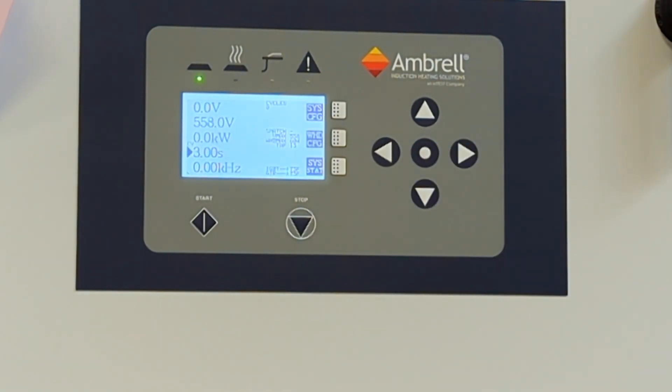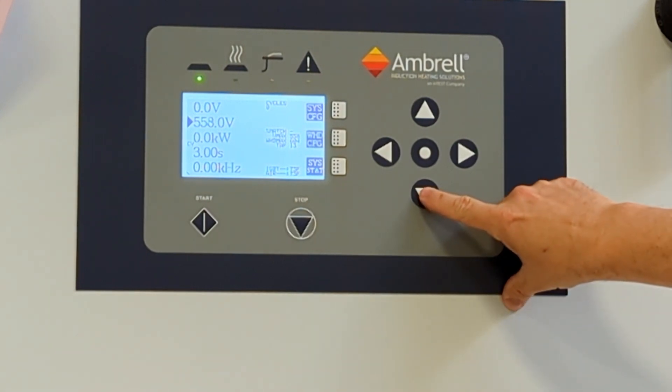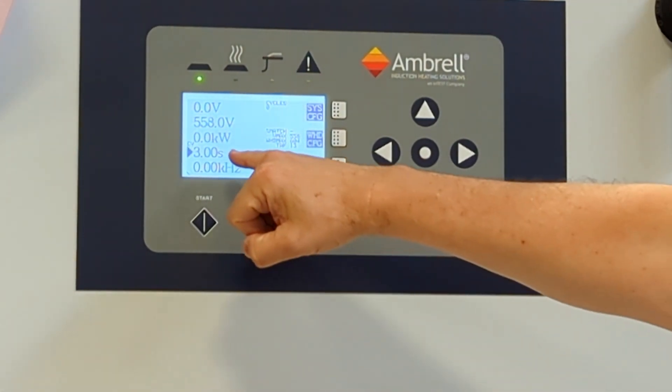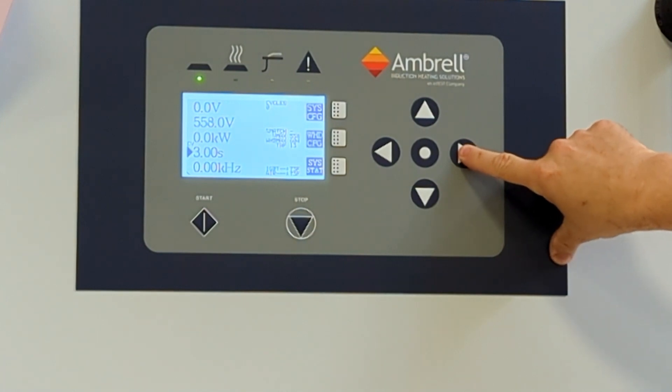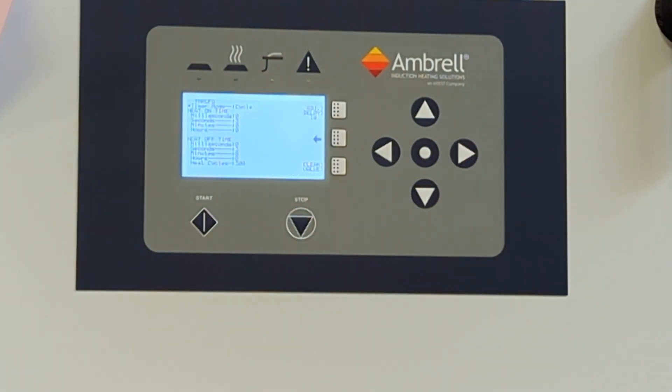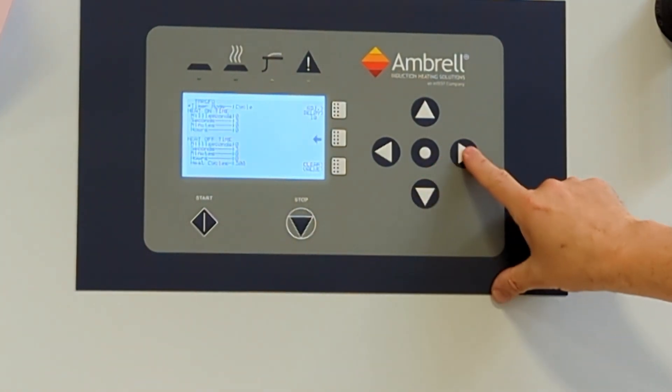Center home key takes you back to the main display. To change modes, you press the down key once so the arrow moves in front of the timer, press the right arrow key, and then press the right arrow key again until you get the mode you want to be in.